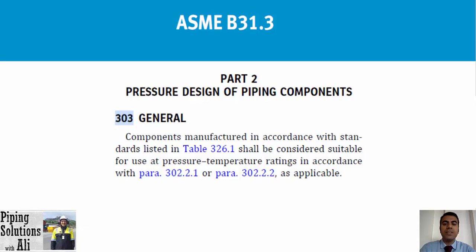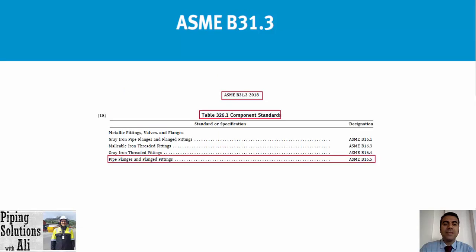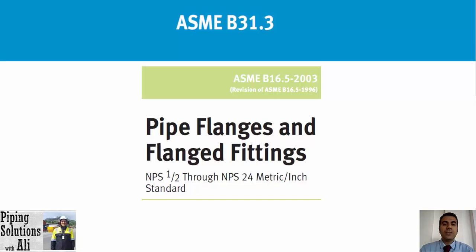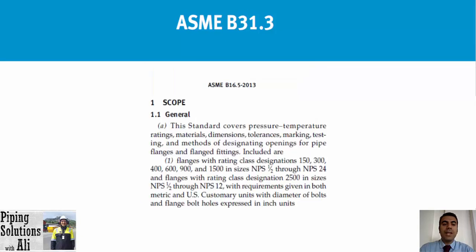Now let's see which standard is specified in Table 326.1 for flanges. For pipe flanges and flanged fittings, ASME B16.5 is specified. It's beneficial to have a look at ASME B16.5, which covers NPS (nominal pipe size) 1½ through NPS 24. Based on clause (a) of paragraph 1.1 general of ASME B16.5, this standard covers pressure-temperature ratings, materials, dimensions, tolerances, marking, testing, and methods for designating openings for pipe flanges and flanged fittings.